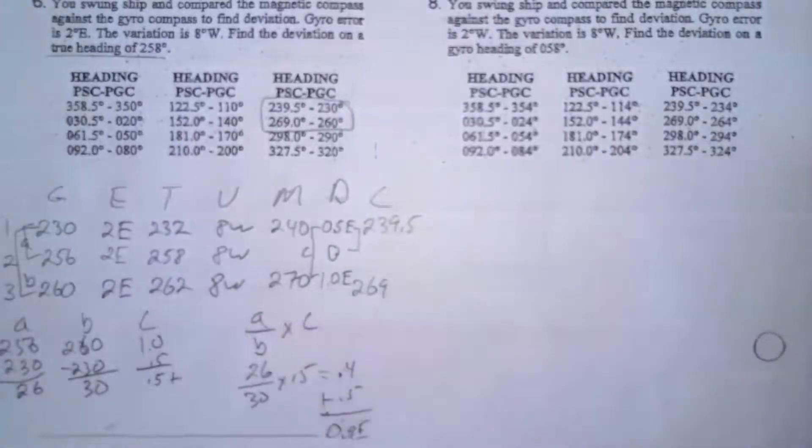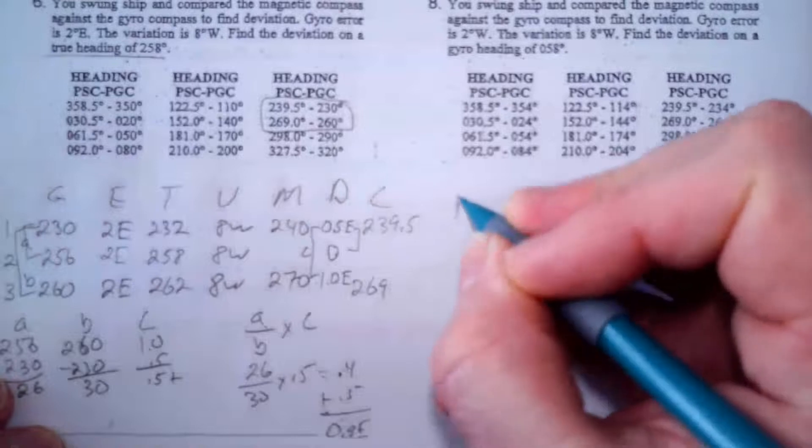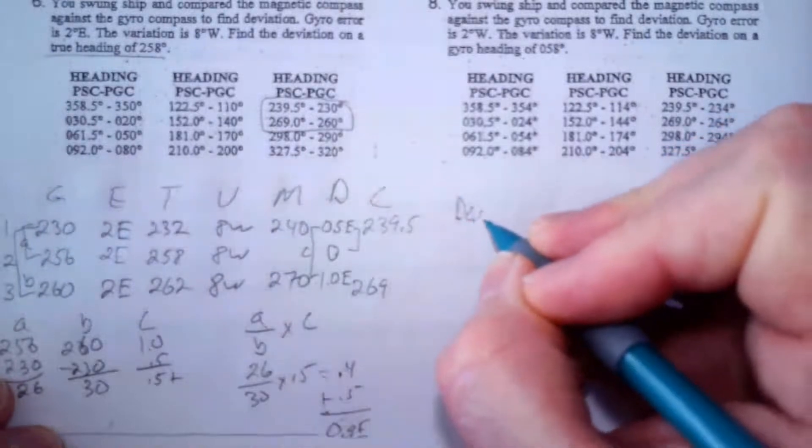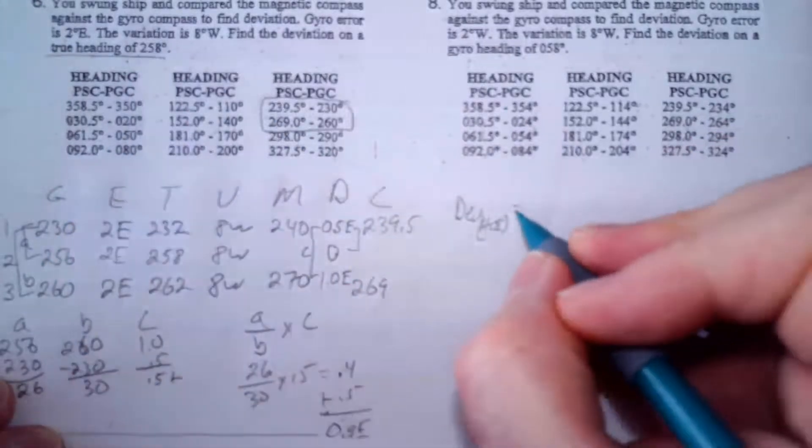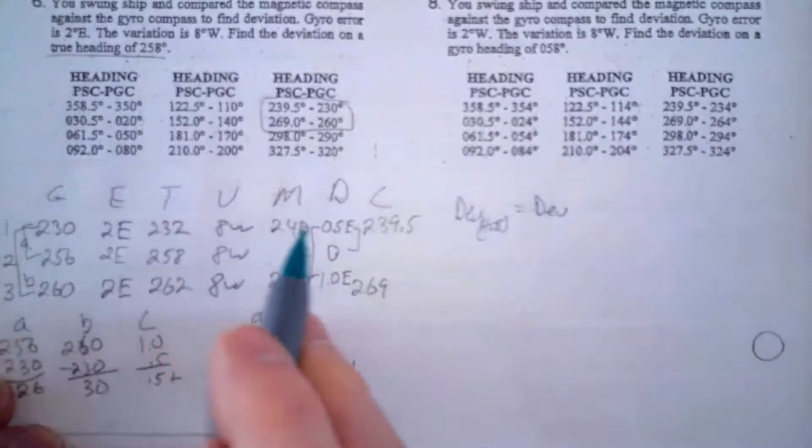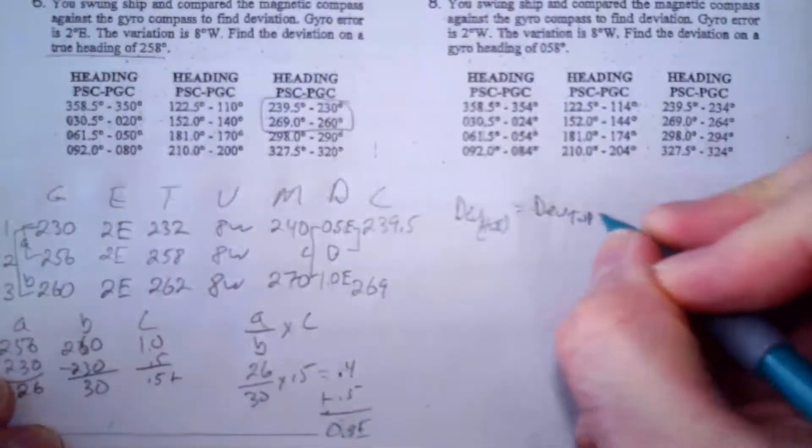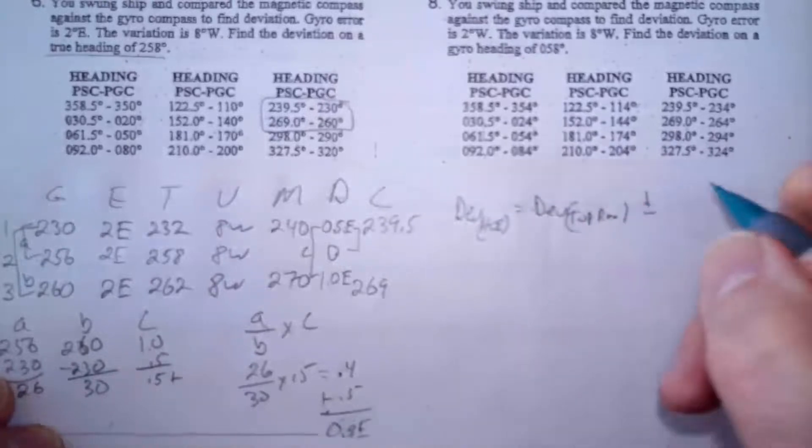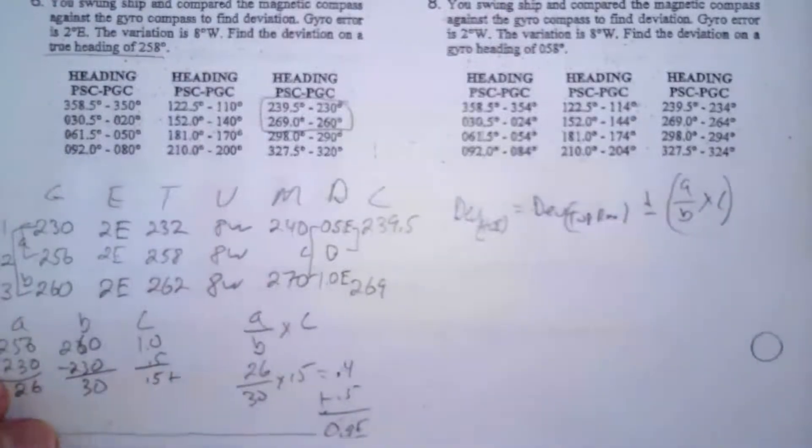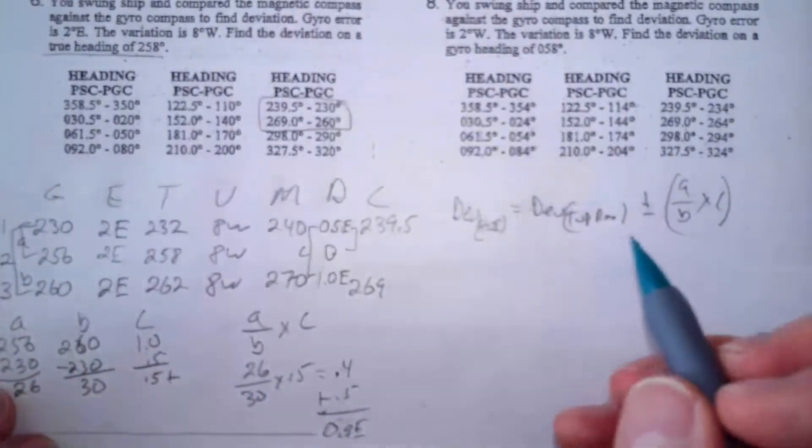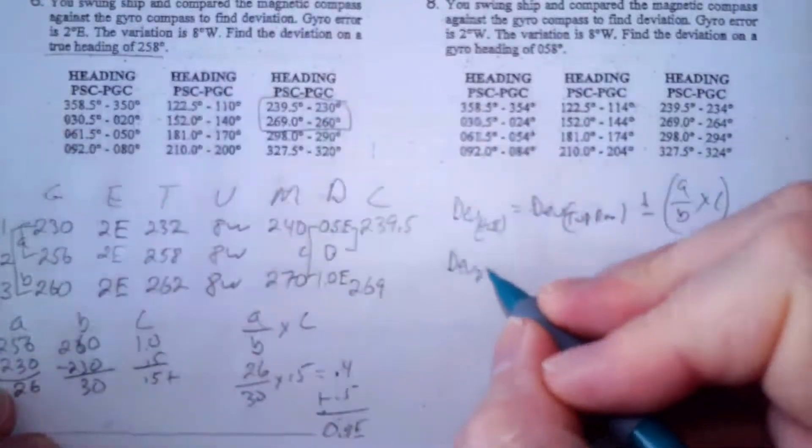But if you don't really like that, you want to memorize a formula, here I'll give you a formula. The formula goes like this: deviation for the heading of interest, and in this case the heading of interest is going to be 258, equals the deviation from the top row, that would be 0.5, plus or minus A over B times C. So let's go through this. The deviation for my heading of interest is 258 true.